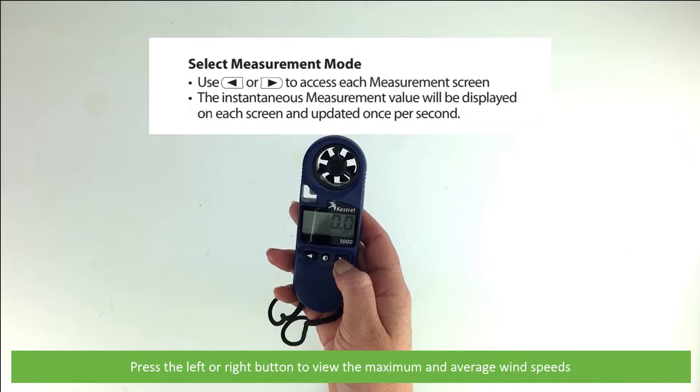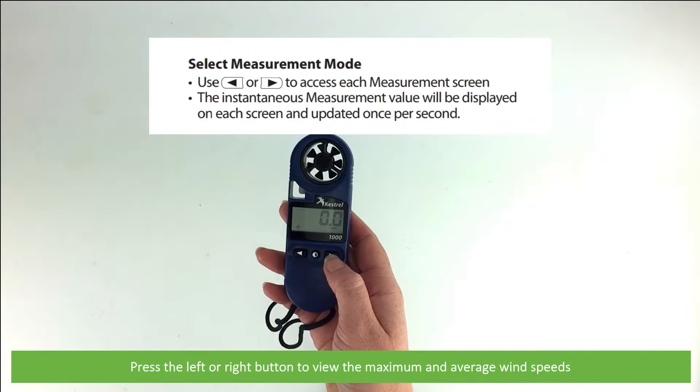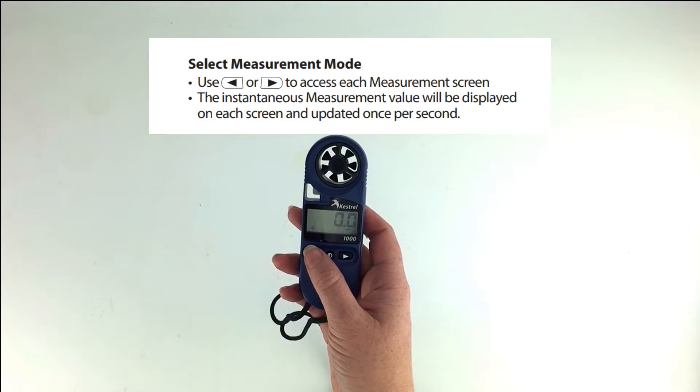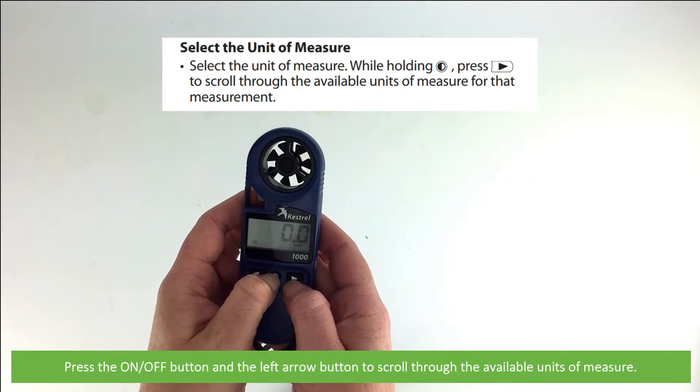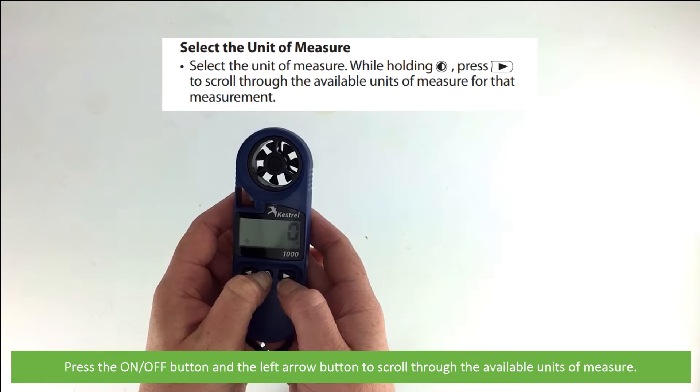Press the left or right button to view the maximum and average wind speeds. Pressing the on-off button and the left arrow will allow you to scroll through the available units of measure.